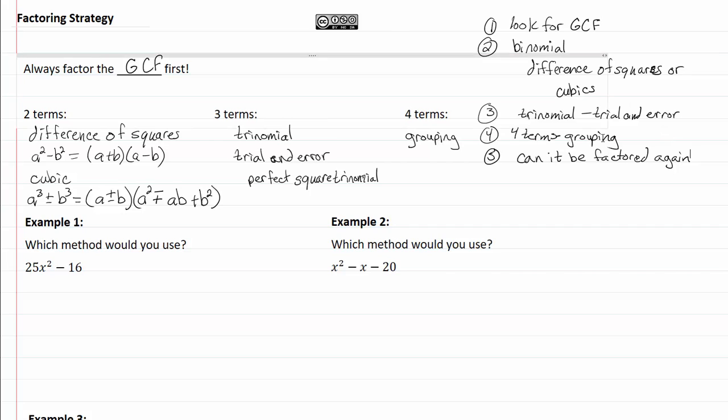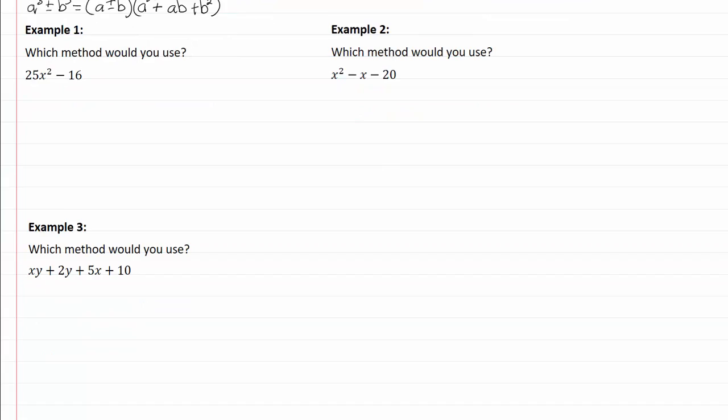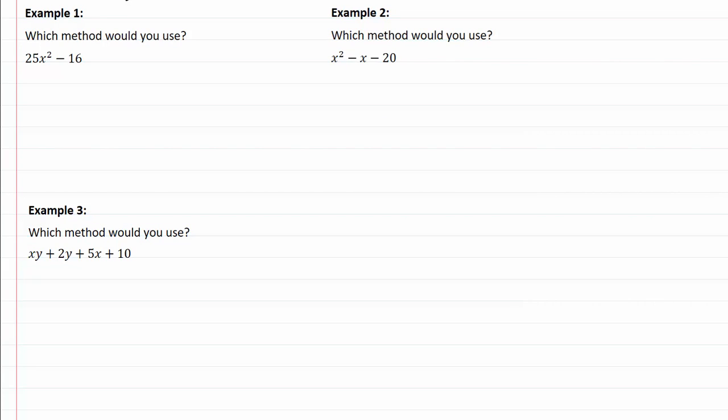So this is lots to remember. Really recommend that you have it written down in front of you when you're working on these. So let's go to our examples. Basically, we want to use these to decide what's going to be the best method to factor a particular polynomial. So if we look at this one, we have two terms, so that means we have either the option of difference of squares or cubic.